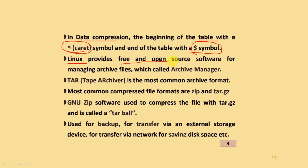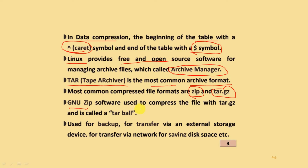Linux provides free and open source software for managing archive files, which is called the archive manager. The tape archiver TAR is the most common archive format. The most common compressed file formats are the ZIP file format and the tar.gz file format. GNU ZIP software is used to compress files with tar.gz, called a tarball. It is used for backups and transfers using external storage devices, network transfers, or for saving disk space.